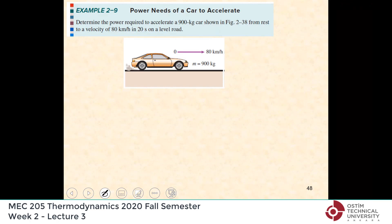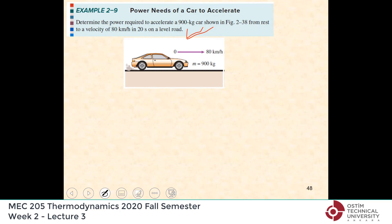Another example, similar. This time the car is on a level road — no change in elevation — but it is accelerating. The mass is 900 kilograms and it goes from zero to 80 kilometers per hour in 20 seconds, which is not a high acceleration. The question is: how much power does the car need?